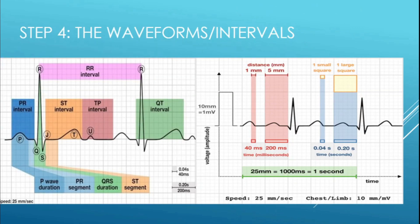Step four: now that we're away from the axis, we can go on to waveforms and intervals — they're pretty self-explanatory and pretty easy. These pictures from Life in the Fast Lane give you the millimeters, how many seconds each interval is, and your different intervals and values. I'm not going to go into all of them in depth, but here they are if you want to pause and look.